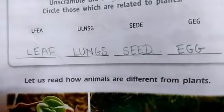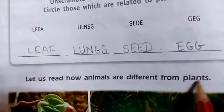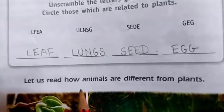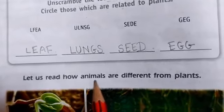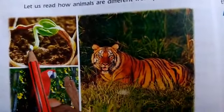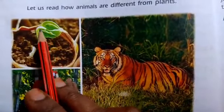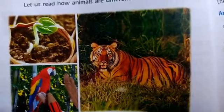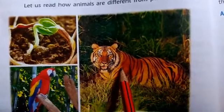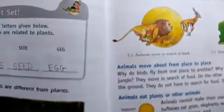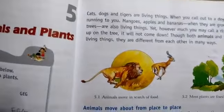Now let us read how animals are different from plants in this chapter. Is chapter mein hum yeh padhenge ki kis prakar se animal, plant se different hote hain. You are looking at that picture here — the plant is germinating from a seed, and here are birds and a tiger. What difference is there among them?